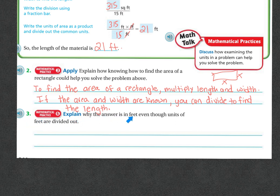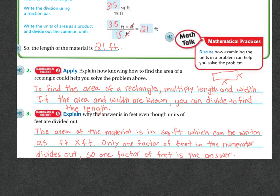Number three, explain why the answer is in feet, even though the units of feet are divided out. The area of the material is in square feet. Remember, square feet means squared. Squared means you're going to go two times two. In other words, feet times feet. So only one factor of feet is in the numerator, which is going to divide itself out. So that one factor of feet is still the answer. Because we crossed out one factor of feet, and we're still left with this factor of feet.